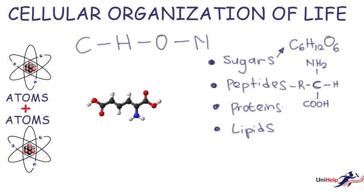The proteins are formed from the peptides. The peptides are the monomers of the proteins — that is, several peptides combine together to form the proteins. The lipids are formed from carbon, hydrogen, and oxygen, but the oxygen content in lipids is less than that of the sugar. This lesser oxygen content allows the lipids to store even more energy. One molecule of lipid can produce twice as much energy as that of sugar.